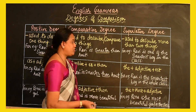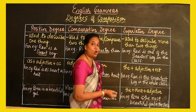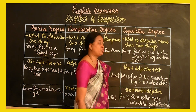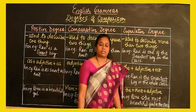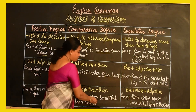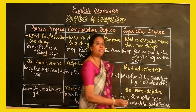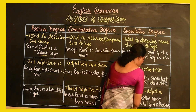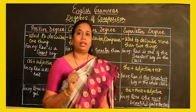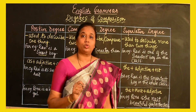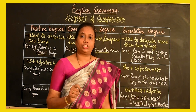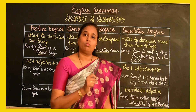In the superlative degree, we add the word 'most' before the adjective. So we say 'Renu is the most beautiful girl in the class.' Beautiful becomes 'more beautiful' in the comparative and 'most beautiful' in the superlative. Similarly, another example of an irregular adjective is 'intelligent': intelligent, more intelligent, and most intelligent.